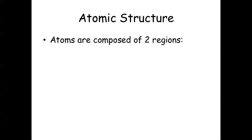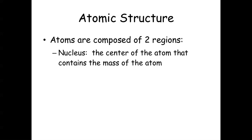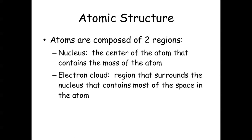Atoms are composed of two regions: the nucleus, which is the center of the atom that contains most of the mass of the atom — because remember electrons are super tiny — and the electron cloud, which is the region that surrounds the nucleus and contains most of the space of the atom.